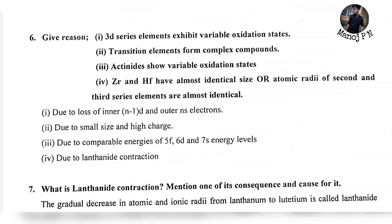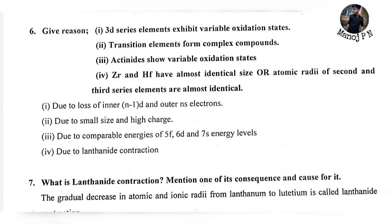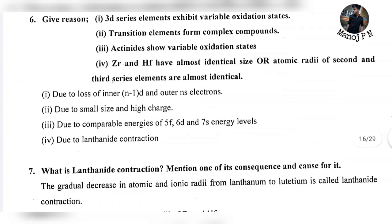3D series elements exhibit variable oxidation states due to the loss of (n-1)d and ns electrons — both inner (n-1)d and outer ns electrons. Transition elements form complex compounds due to their small size and high charge. Actinides show variable oxidation states due to comparable energies of 5F, 6D, and 7S energy levels.